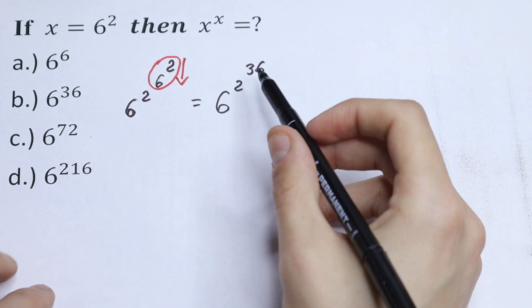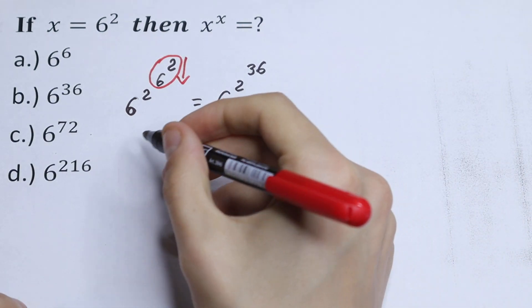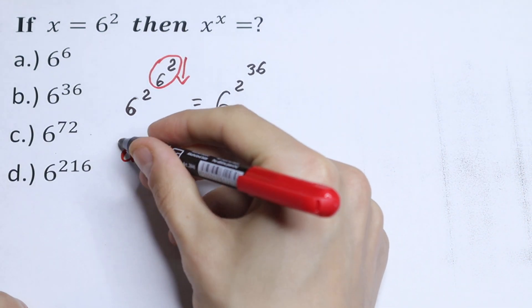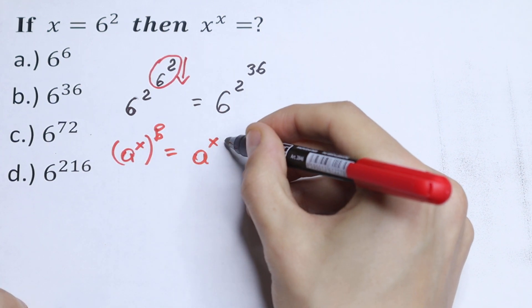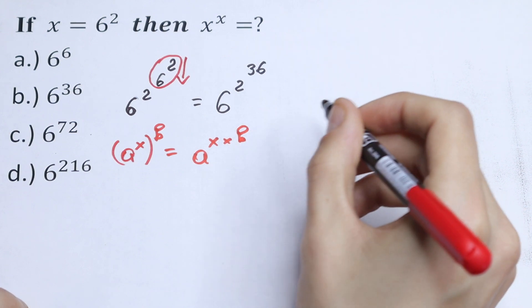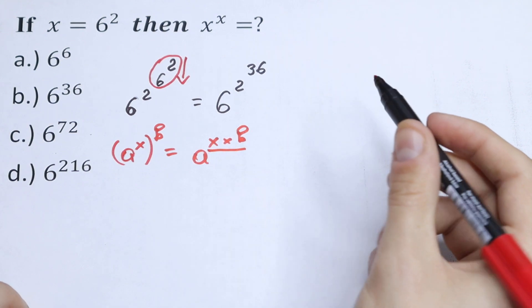What we are going to do next? We all know that if we have, for example, a to the power x raised to the power b, it will be equal to a to the power x times b. So we just multiply our powers.